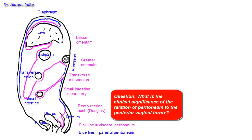In the male it is reflected directly onto the urinary bladder and is called the recto-vesical pouch, but in the female it is reflected onto the posterior vaginal fornix and posterior wall of the uterus. The peritoneum covers the entire posterior wall of the uterus, reflected onto the fundus and then the anterior wall of the uterus for about the upper two-thirds, and is reflected onto the upper surface of the urinary bladder, creating the utero-vesical pouch.